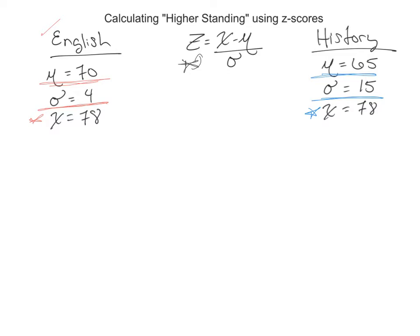So let's start with English. Our X, our raw score, 78—because we scored 78 in both English and history—minus the mu of 70, because that was the average score for the English class, divided by the standard deviation of 4. So 8 divided by 4, you have a Z score of positive 2.00, meaning you were two standard deviations above the mean in that class.